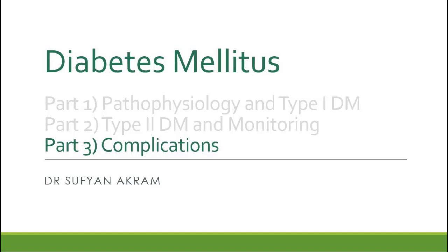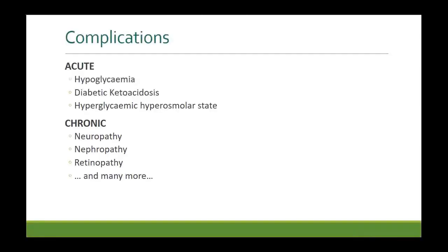We'll be looking at complications of diabetes, both acute and chronic. Complications can be divided into two major categories: acute and chronic. Acute complications are hypoglycemia, diabetic ketoacidosis, and hyperglycemic hyperosmolar state. Hypoglycemia is most commonly a complication of treatment. Diabetic ketoacidosis is seen in type 1 diabetic patients, and hyperglycemic hyperosmolar state is seen with type 2 diabetes. Chronic complications are associated with both types.